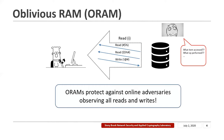ORAMs protect against full online adversaries that can observe all the reads and writes performed by a user, so they provide very strong security guarantees. Ideally we would want to employ an Oblivious RAM to secure our local storage devices. However, ORAMs are also extremely slow. Deploying them to secure local storage devices is impractical because ORAMs would introduce prohibitive overheads for your I/O, resulting in unreasonably slow application throughputs.